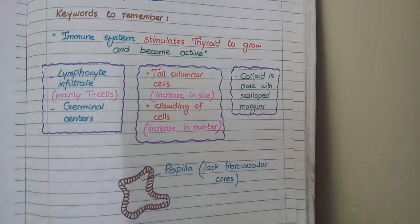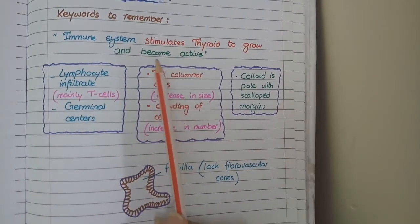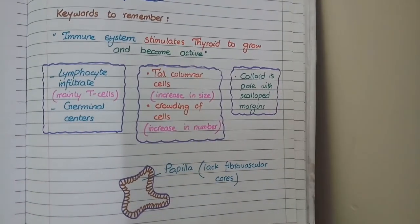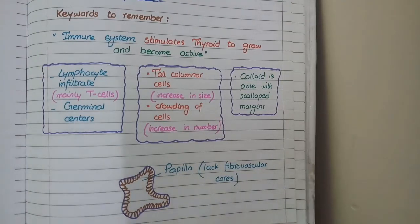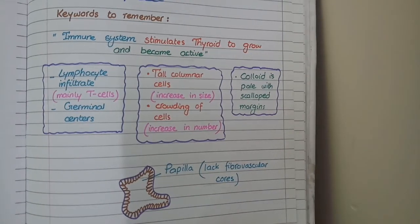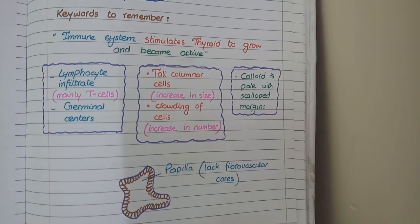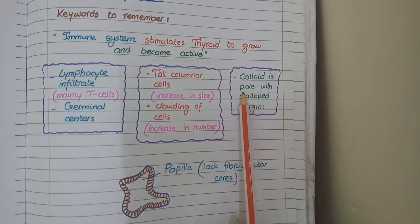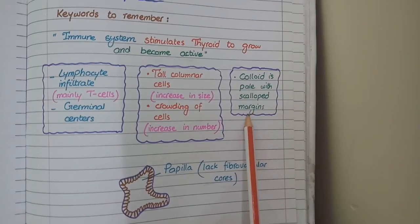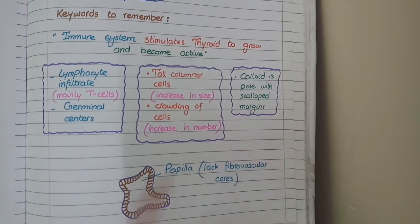The third keyword is that the immune system stimulates the thyroid to become active. Active cells need to synthesize a lot of hormone, so the follicular cells ingest a lot of colloid by endocytosis, since thyroid hormones are made from colloid. This ingestion makes the colloid pale with scalloped margins.